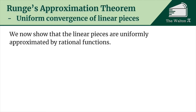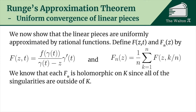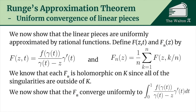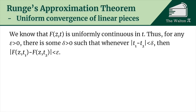We now show each linear piece is uniformly approximated by rational functions. Define f(z, t) = f(gamma(t)) / (gamma(t) minus z) times gamma'(t), and define f_n(z) = (1/n) times the sum from k=1 to n of f(z, k/n). Each f_n is holomorphic on K since all singularities are outside K. We will show the f_n's converge uniformly to the integral from 0 to 1 of f(gamma(t)) / (gamma(t) minus z) times gamma'(t) dt. Since f(z, t) is uniformly continuous in t, for any epsilon greater than zero there is a delta such that |t1 - t2| less than delta implies |f(z, t1) - f(z, t2)| less than epsilon.